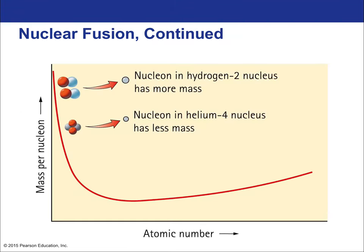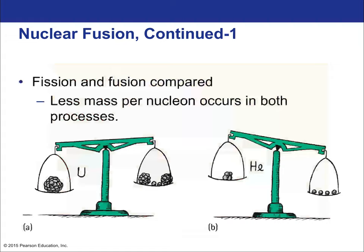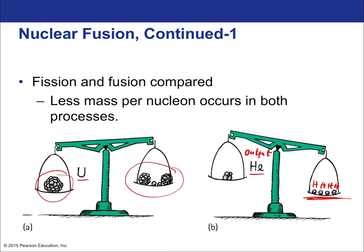In fusion, two deuterium atoms — hydrogen-2, with more mass per nucleon — are fused together to make helium-4, which has less mass per nucleon. The lost mass becomes energy. Typical fusion reactions include: two deuteriums fusing to form helium-3 plus a free neutron and radiant energy; or a deuterium and a tritium (hydrogen-3, with one proton and two neutrons) fusing to produce helium-4 and a neutron. In both cases, the input mass exceeds the output mass, and the difference is released as energy.